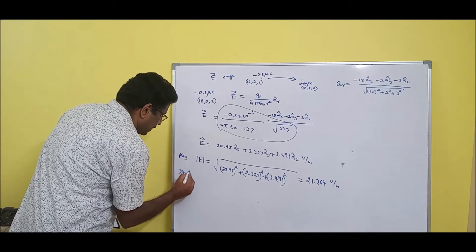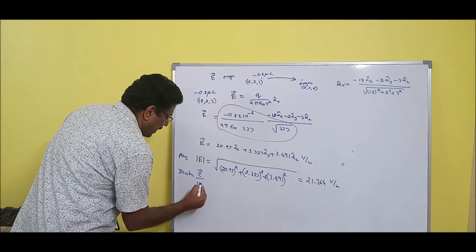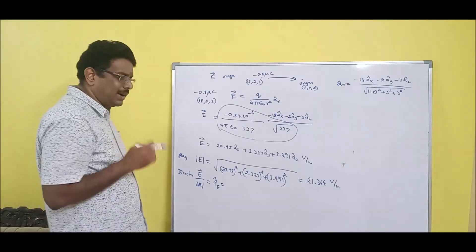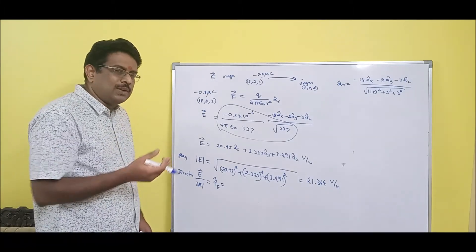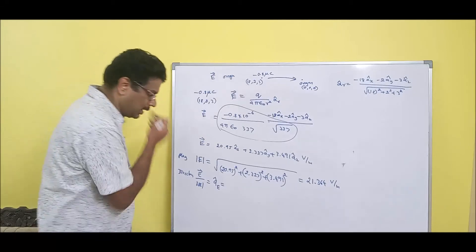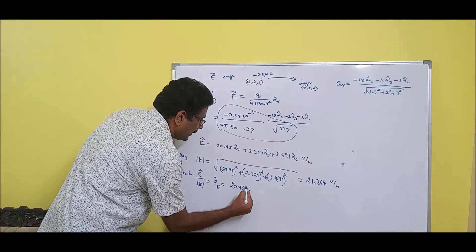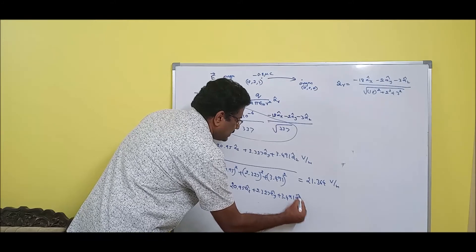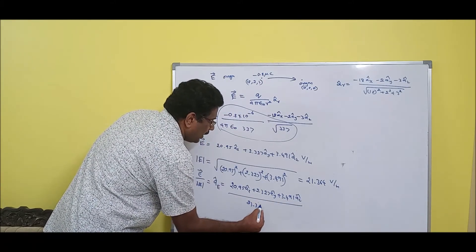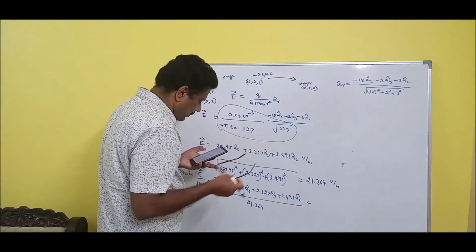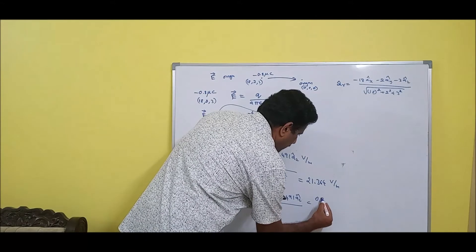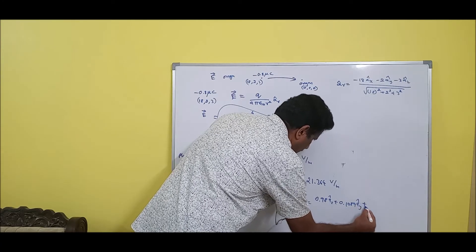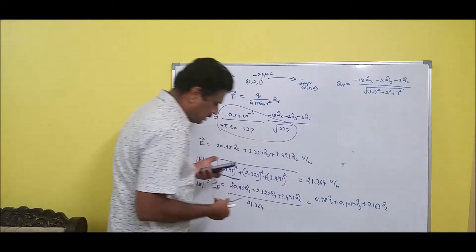For the direction, we find the unit vector: E-vector divided by the magnitude of E. So (20.95·ax-cap + 2.327·ay-cap + 3.491·az-cap) divided by 21.364 gives 0.98·ax-cap + 0.1089·ay-cap + 0.163·az-cap. There is no unit — it is just a direction.